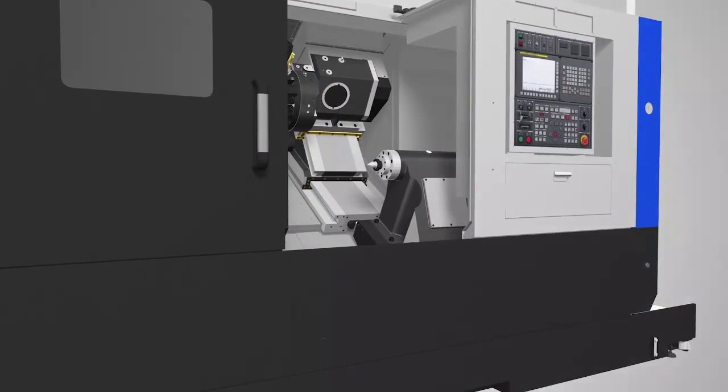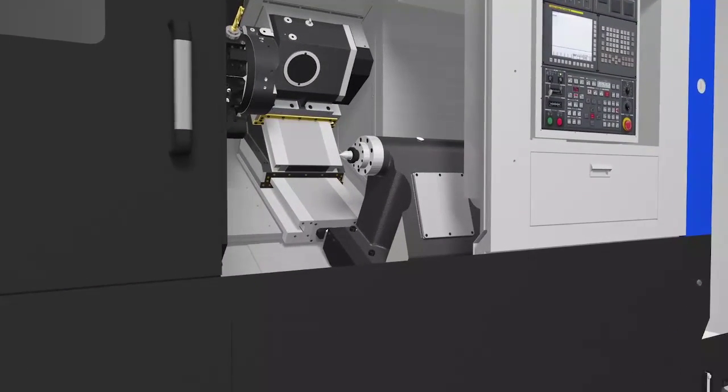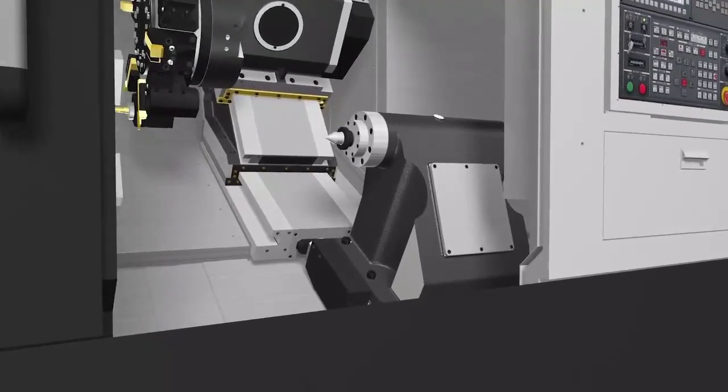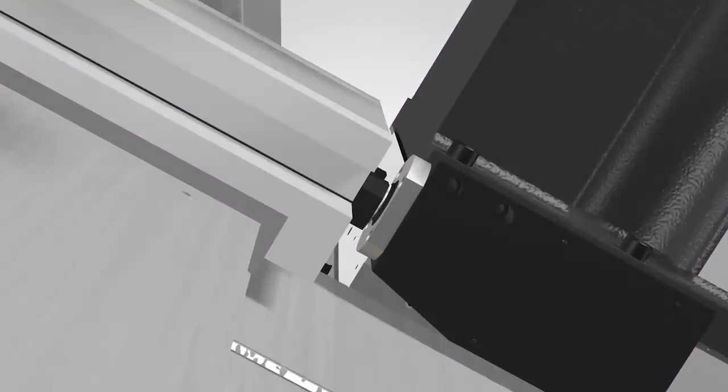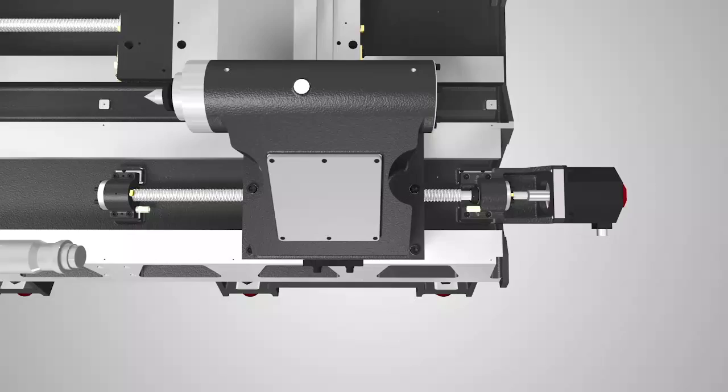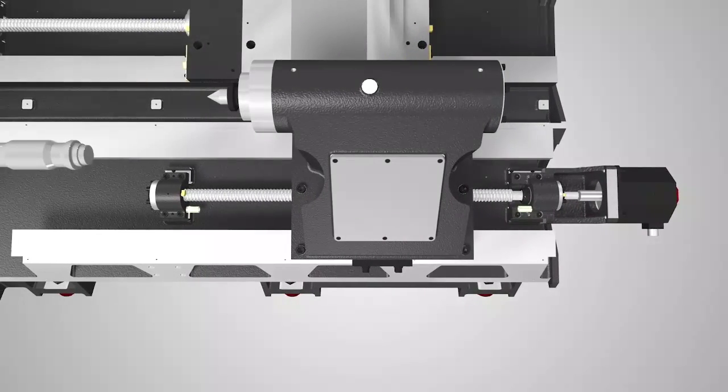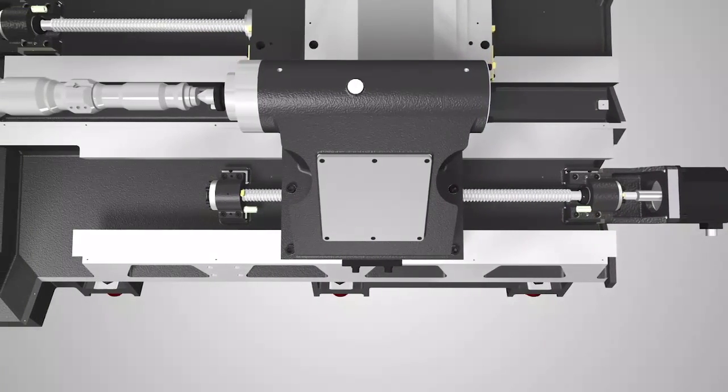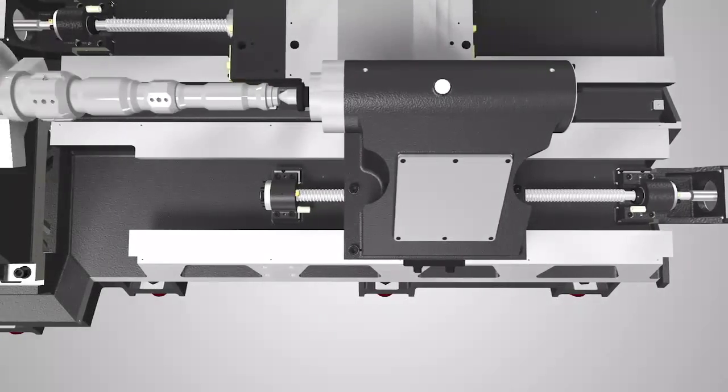Programmable quill-type tailstock is a standard feature of L2600SY. It has MT4 tailstock spindle. Movement of the tailstock body and spindle is operated by M-code. You can also choose NC tailstock as an option where the body movement is controlled by NC programming, adding convenience.